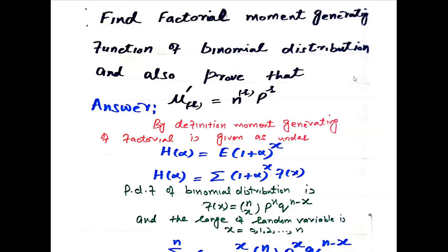In this video, I solve the factorial moment generating function of binomial distribution and also prove the relationship that mu r prime is equal to n_r times p^r. By definition, the moment generating function for factorial is given as h of alpha is equal to the expected value of (1 + alpha) to the power x.